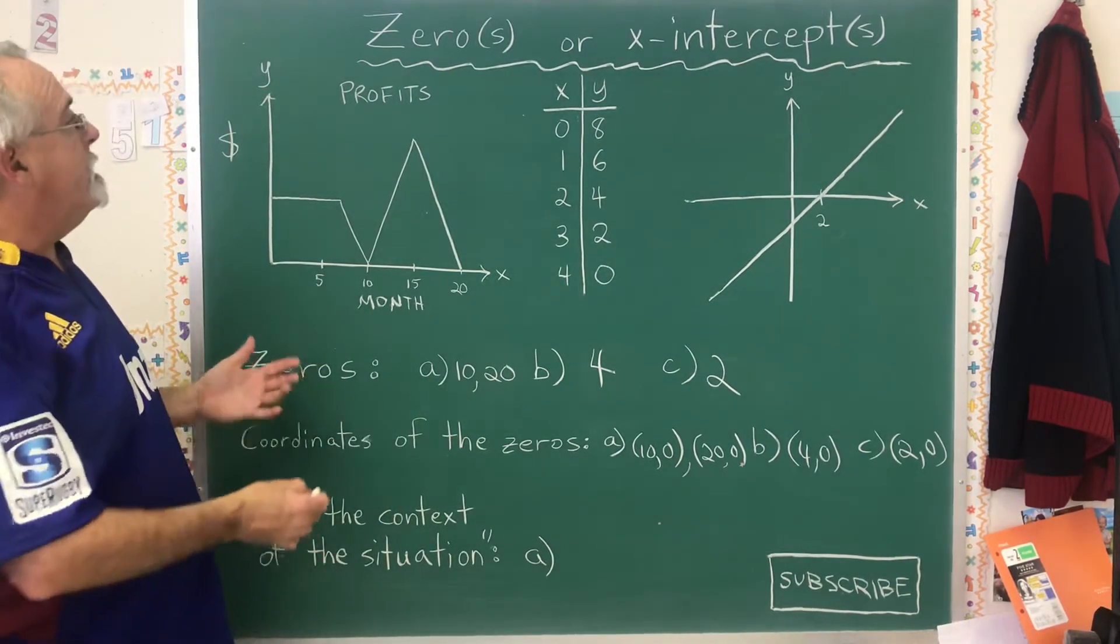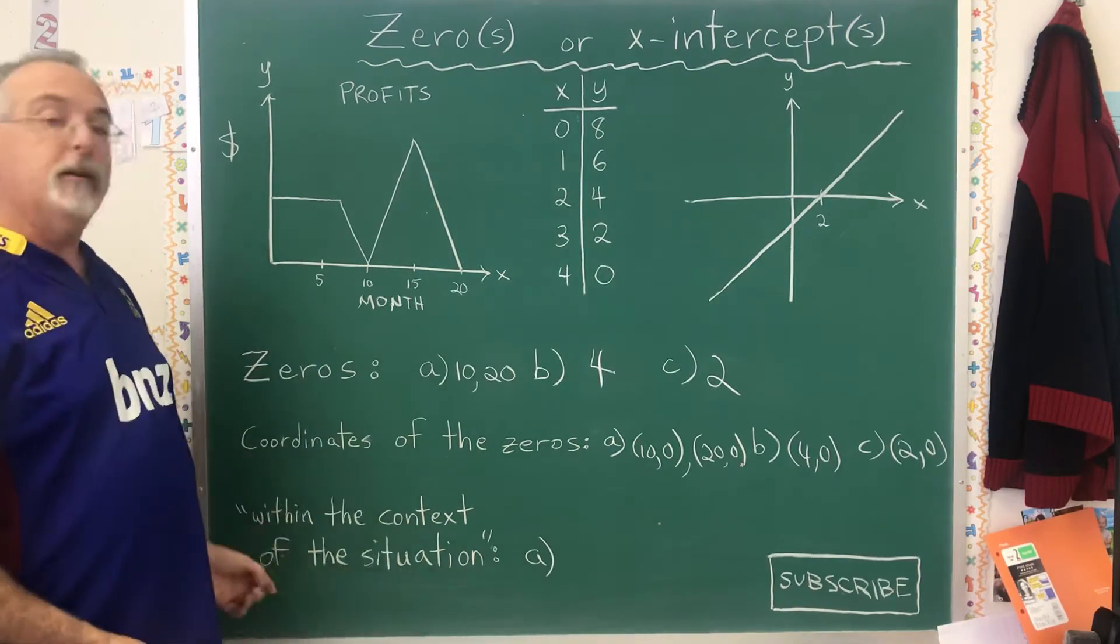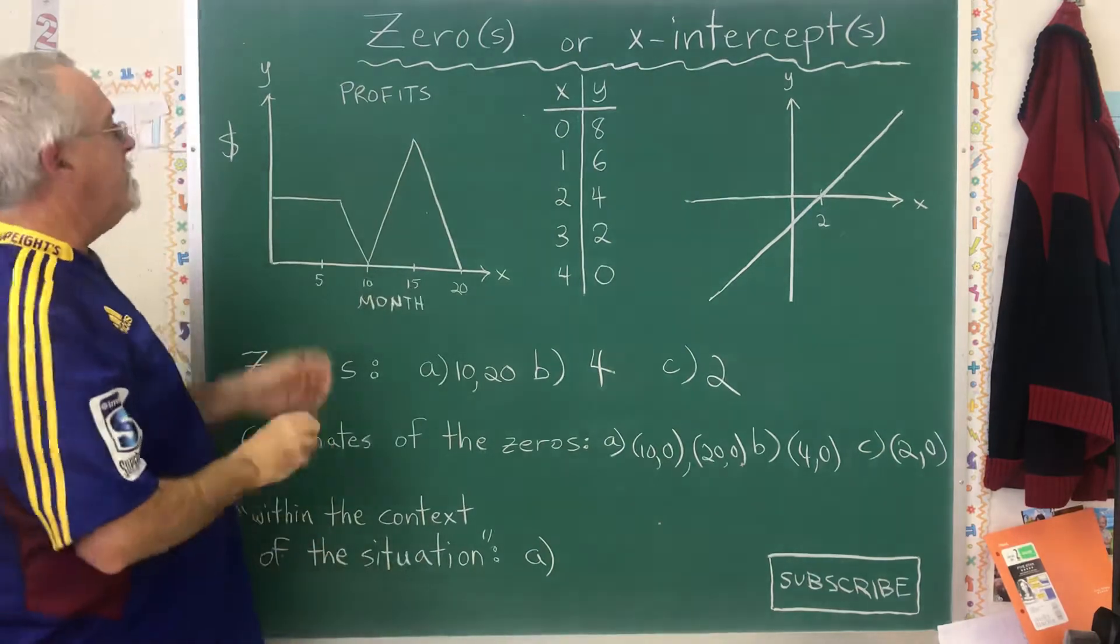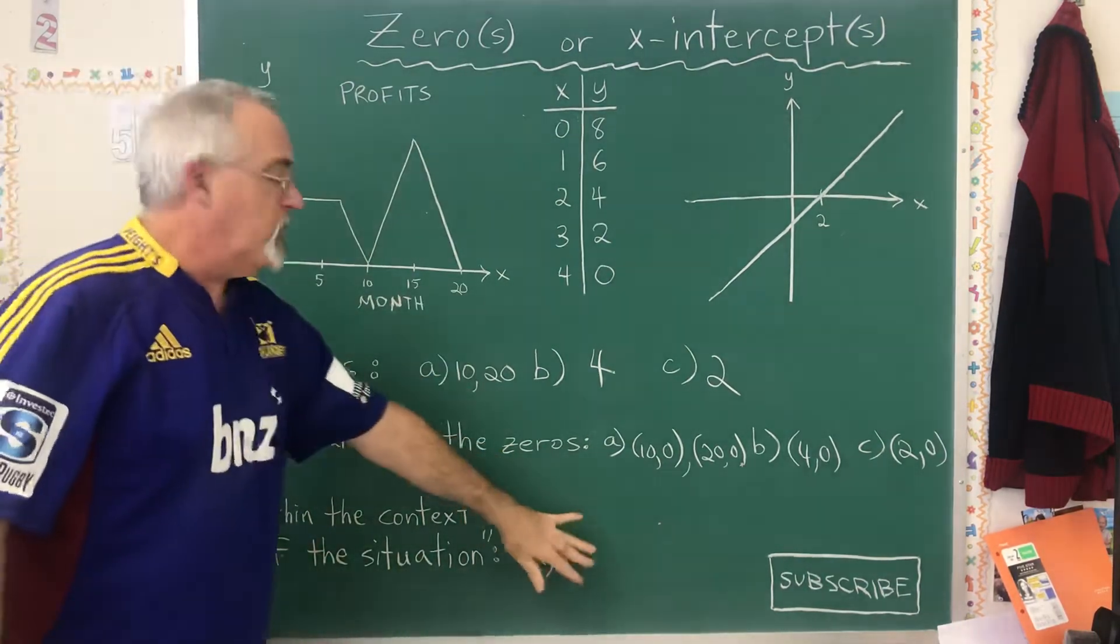Finally, we could be asked for the zeros within the context of the situation. Well, for B and C, we don't have situations, so I'm only going to answer that for A. I'm not going to write it down.